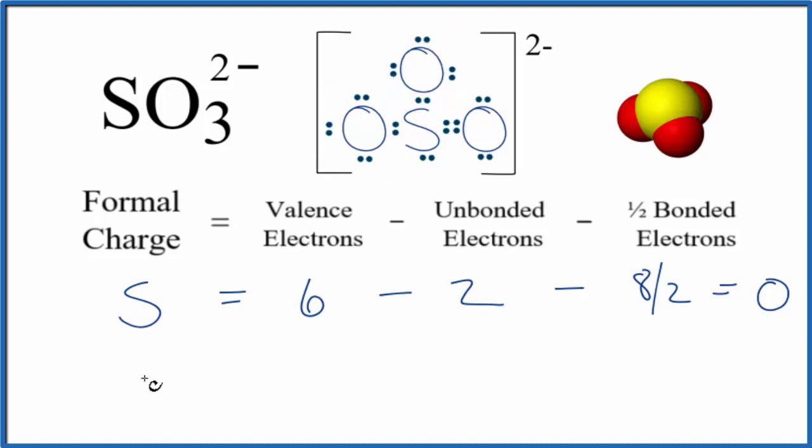For the oxygen atoms, we have these two right here. They're identical, so let's just do one of these, the single bonded oxygen. So put an oxygen here. Oxygen is in group 16 with sulfur, it has six valence electrons.